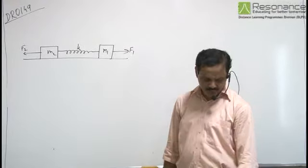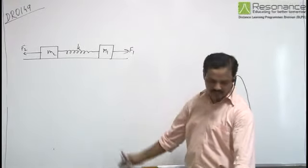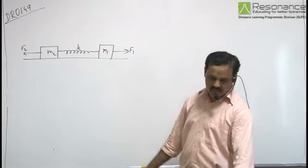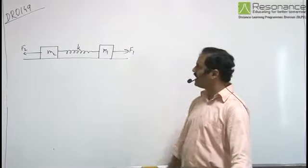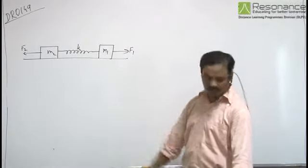In this problem, two blocks are initially at rest with masses M1 and M2. They are connected by a spring having spring constant K.